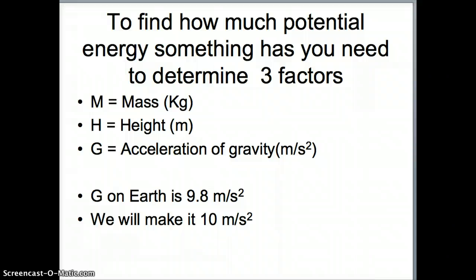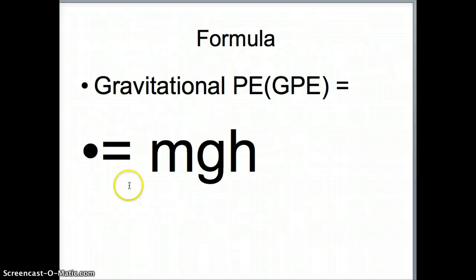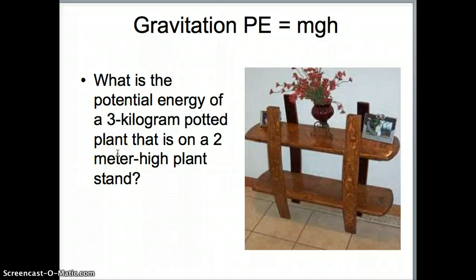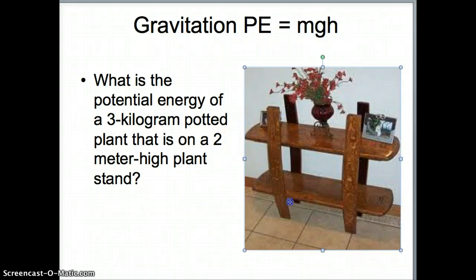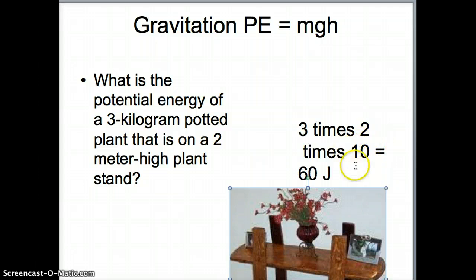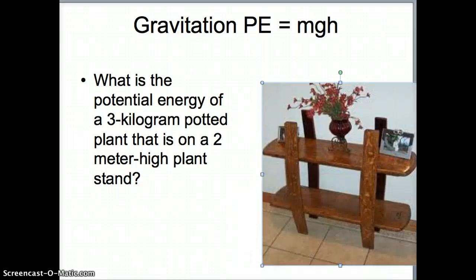There's a really simple formula to figure out how much potential energy something has: mass times gravity times height. By gravity, I mean the acceleration of gravity. Even though it's 9.8 meters per second squared, in our class we'll just use 10 meters per second squared for easy math. So if you have a three-kilogram pot that is two meters high here on Earth, you just do three times two times ten and you get 60 joules. Don't forget the 10 — if we're on Earth, we always multiply by 10. That's gravitational potential energy.